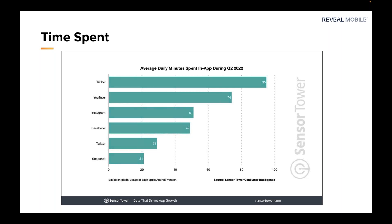95 minutes per day on average are spent in-app by U.S. users — data from Sensor Tower. In a distant second place, YouTube gets 74 minutes. Instagram and Facebook are in roughly a tie, with Facebook increasingly merging into Instagram as a platform. Twitter comes in at 29 minutes per day and Snapchat at 21 minutes. Snapchat, while having tens of millions of users, is really at its core a messaging tool more than an entertainment platform.